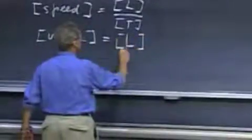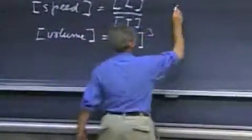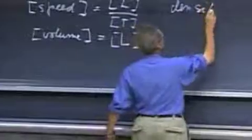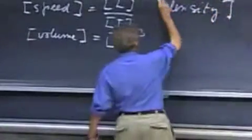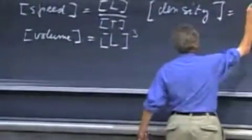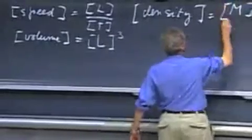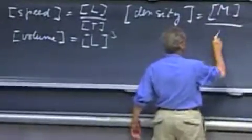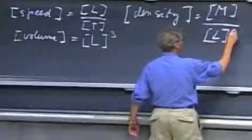Volume would have the dimension of length to the power of three. Density would have the dimension of mass per unit volume, so that means M over L to the power of three.